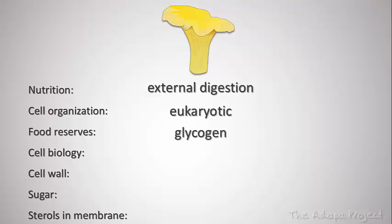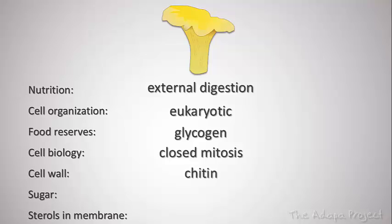Fungi have a different mode of nuclear division than most plants and all animals — it's called closed mitosis, because the nuclear membrane is not broken down during mitosis. Bacteria do not perform mitosis at all since they lack nuclei; they divide by binary fission instead. Fungi have cell walls that contain chitin, while plants have cell walls with cellulose, bacteria have cell walls made of murein, and animals have no cell walls at all.